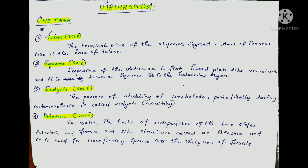The first question is: what is telson? Asked in 2018. Telson is the terminal piece of the abdomen segment, and the anus of prawn lies at the base of the telson. In the abdomen segments, the telson is the last uropod piece bearing the anus.